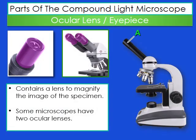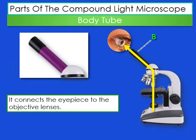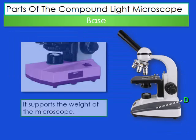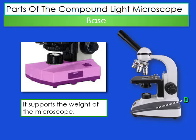Now we're going to look at the parts of the compound light microscope — label the parts on your paper as we go. The ocular lens, or eyepiece, contains a lens that magnifies the image of the specimen; some microscopes have two, some have one. The body tube connects the eyepiece to the objective lens. The arm connects the body tube to the base — one hand should be around the arm when carrying the microscope, and the other on the base. The base supports the weight of the microscope.